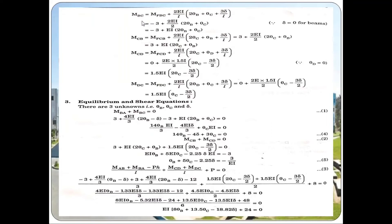For span BC, MBC equals MF BC plus 2EI by L into (2 theta B plus theta C plus 3 delta by L). The member BC moves to B-dash C-dash with no change in length, so sway does not affect BC and delta is zero for span BC. MF BC is minus 3, I is I, L is 2 meters. So finally, MBC equals minus 3 plus EI into (2 theta B plus theta C). Similarly, MCB equals plus 3 plus EI into (2 theta C plus theta B).